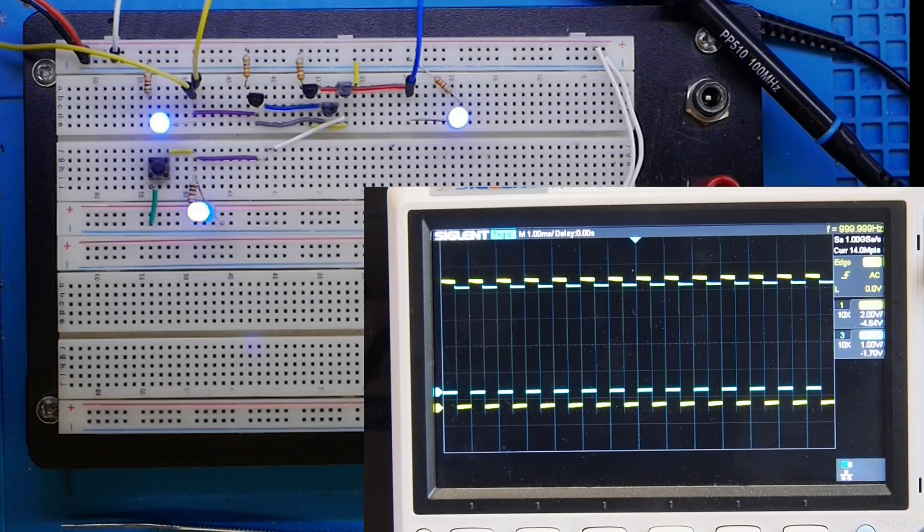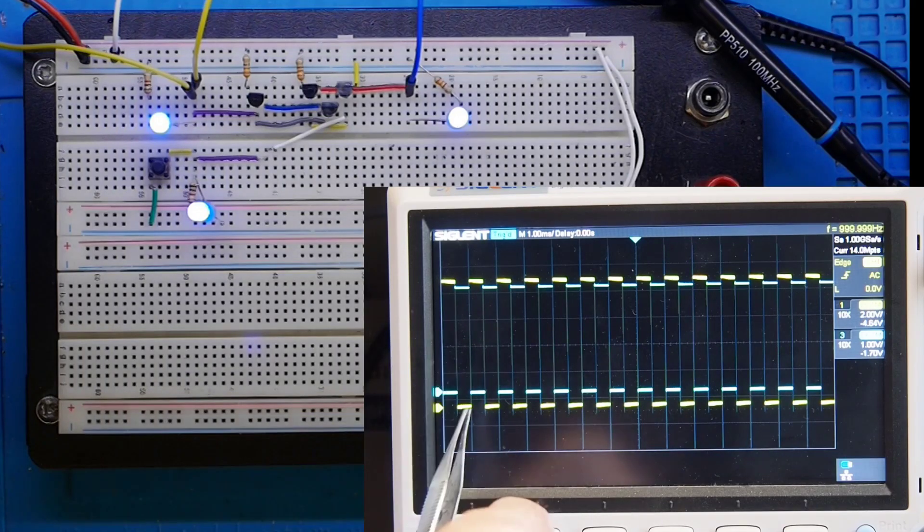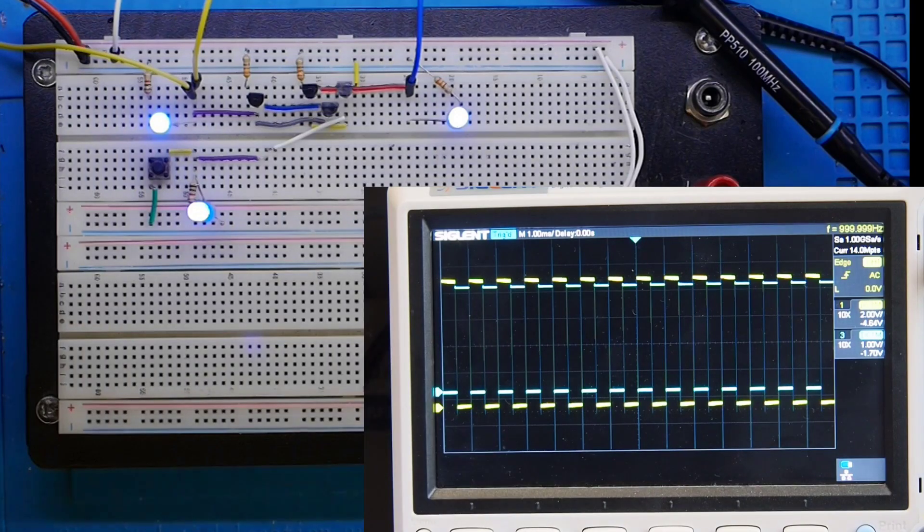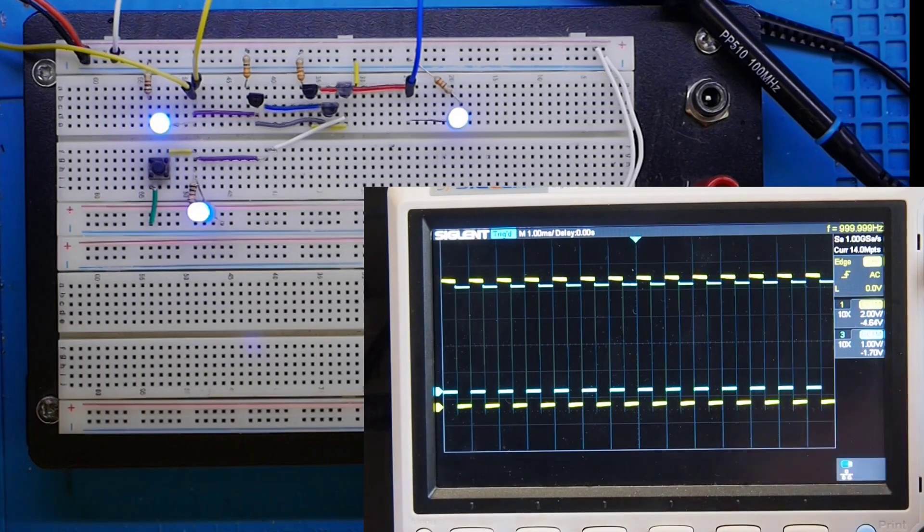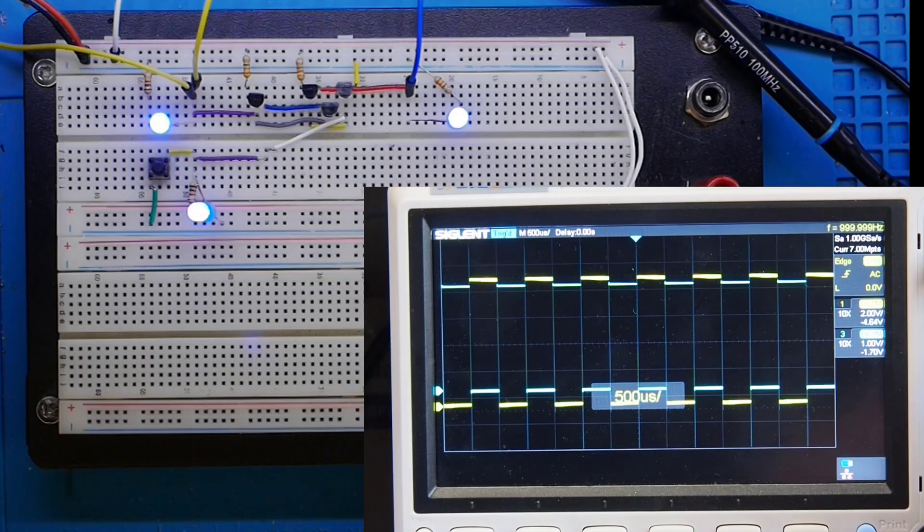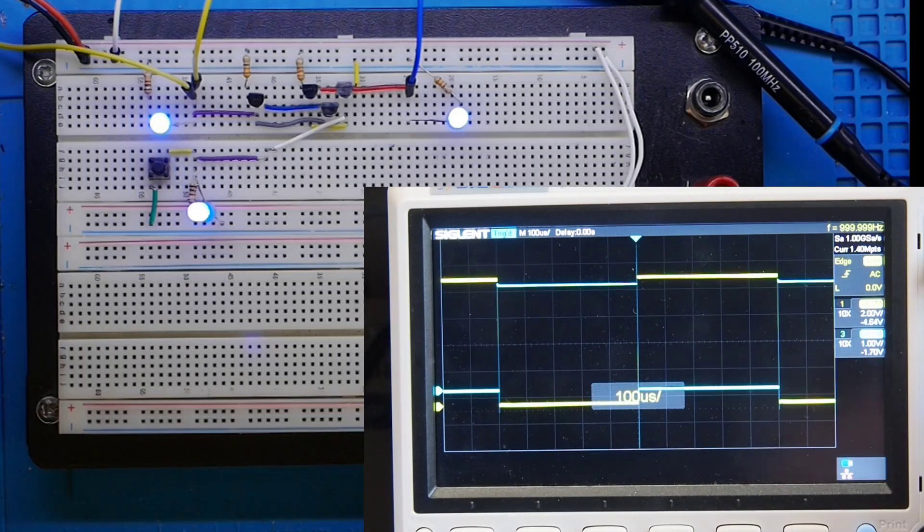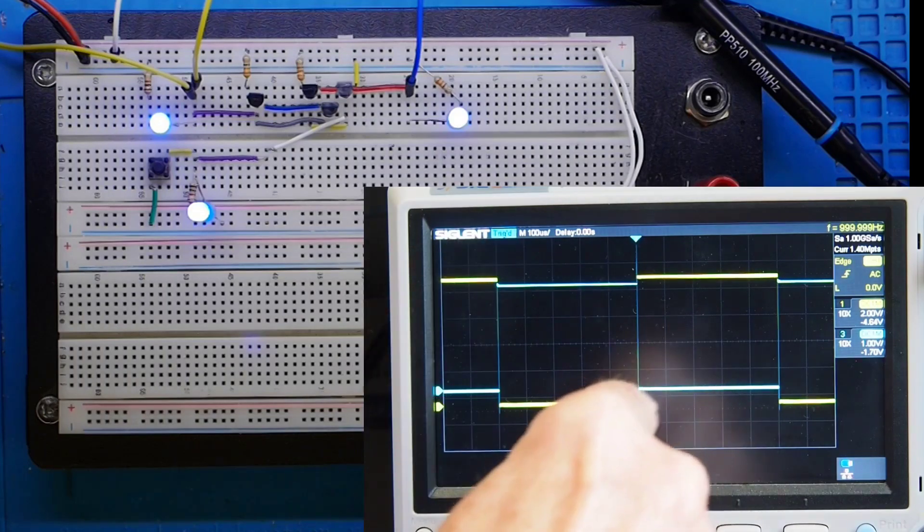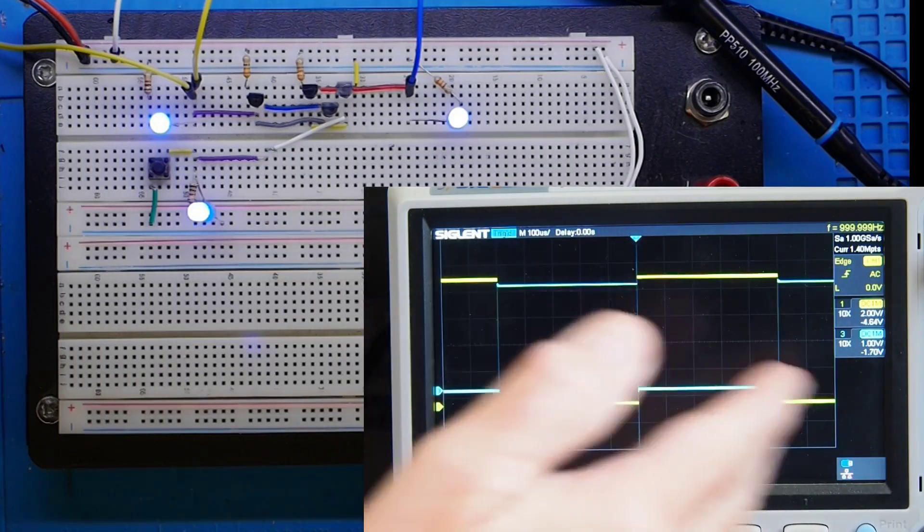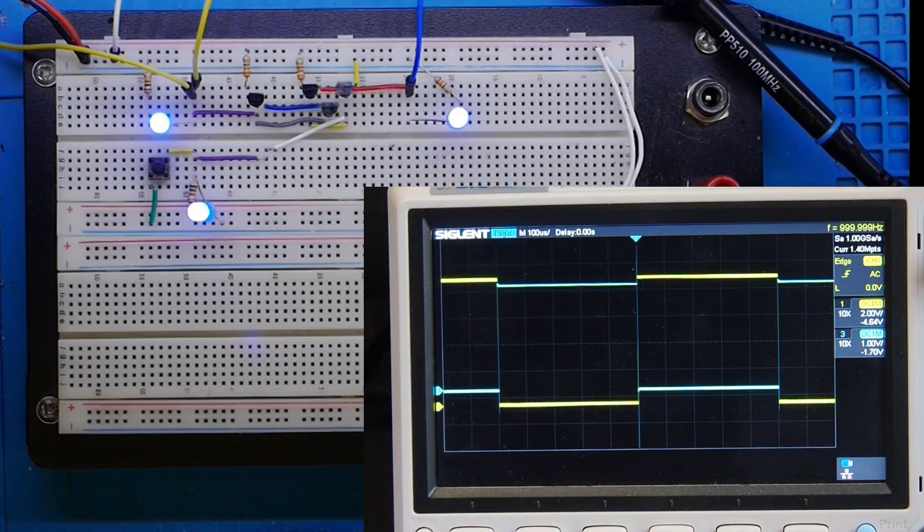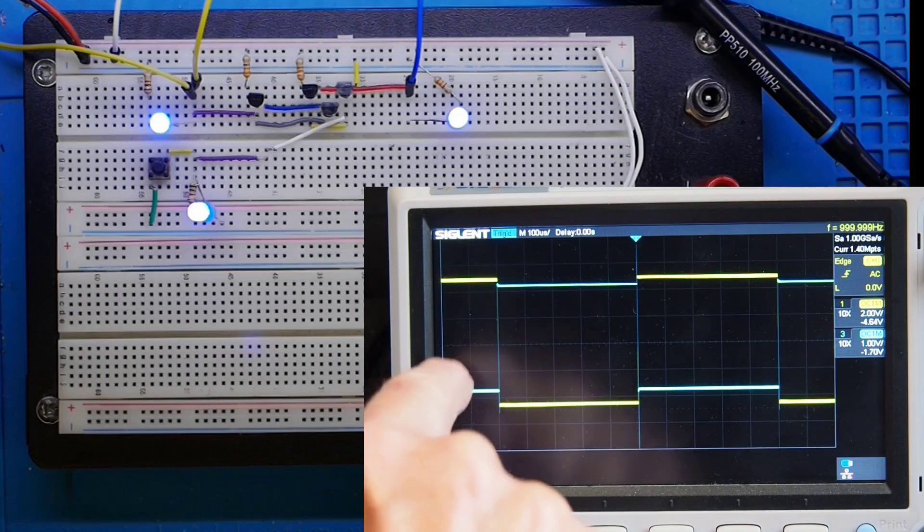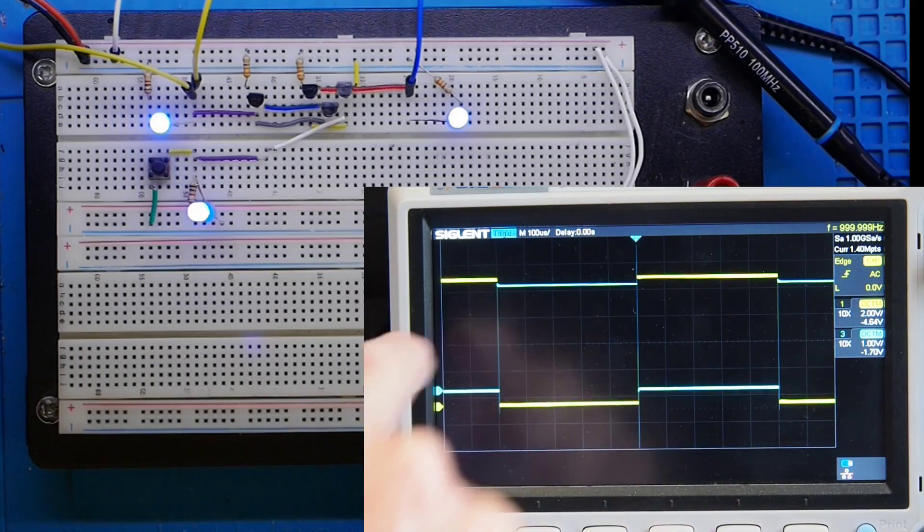Here's the scope view. So we've got yellow trace is the input trace, blue trace is the output trace. So what I'm now going to do is just adjust the time base a little. You can hopefully still see them. We've got definitely got input and output is 180 degrees out of phase, so we've got inversion going on.